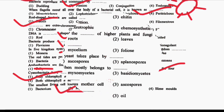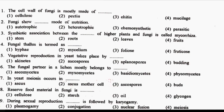Next question: the cell wall of fungi is mostly made of DASH. Option 1: Cellulose. Option 2: Pectin. Option 3: Chitin. Option 4: Mucilag. The correct answer is Option 3, that is Chitin.